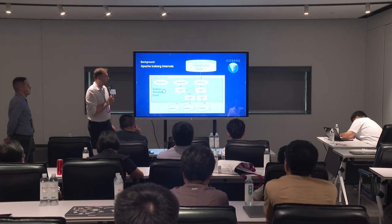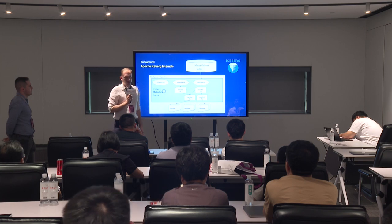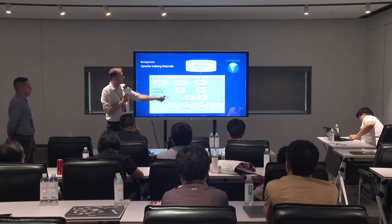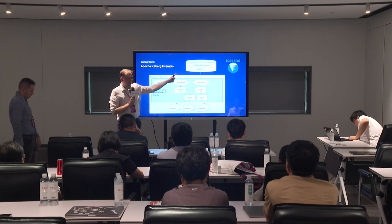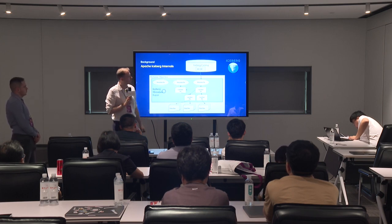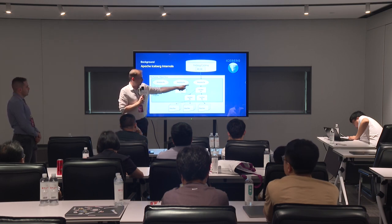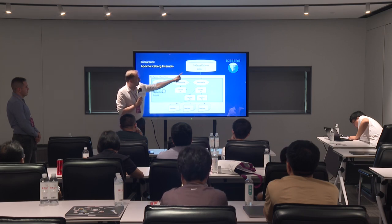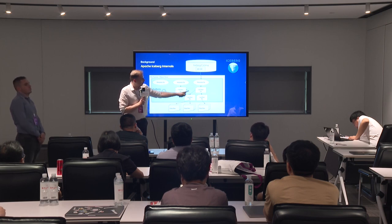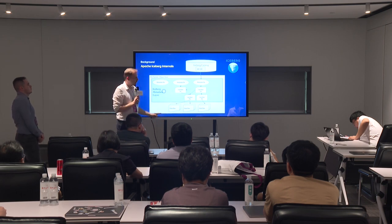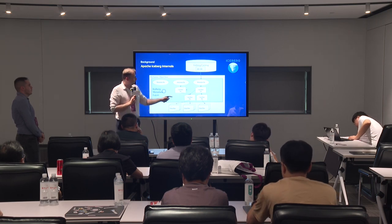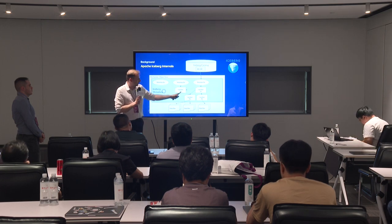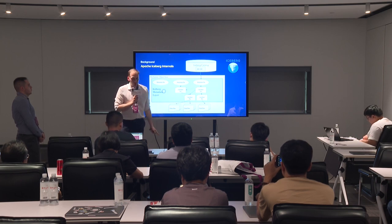At the top of an Iceberg table you need some kind of catalog — the Hive Metastore can serve as an Iceberg catalog. The catalog tells you the current table state, and following that pointer you find a metadata file which is the root of the Iceberg metadata hierarchy. Following the indirections, you can discover a consistent table snapshot. Even if your query engine lags behind and reads an earlier metadata file, it can still find a consistent snapshot of the table.